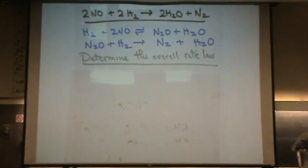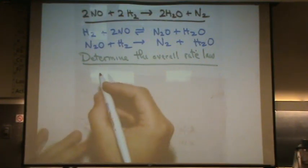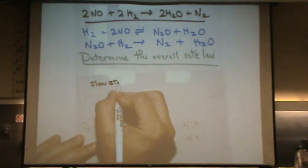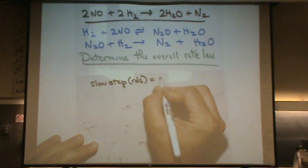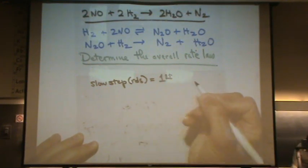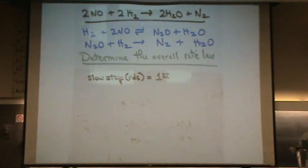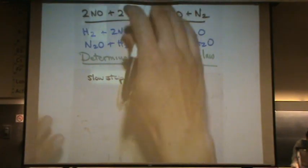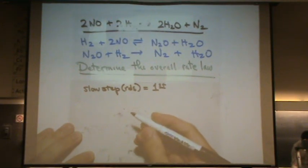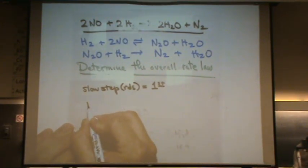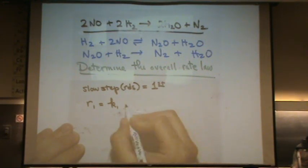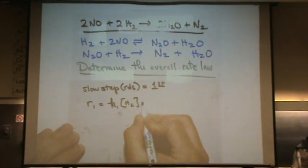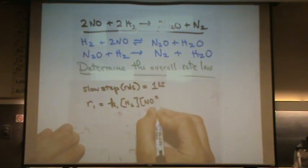So what we're going to do first, our first method of solving is say the slow step or the RDS is the first one. So we'll do this first, then we'll move on to solve it in a different way. So if we're assuming that the slow step is the first one, then your answer would be the first rate, which would be K1 times H2NO squared.